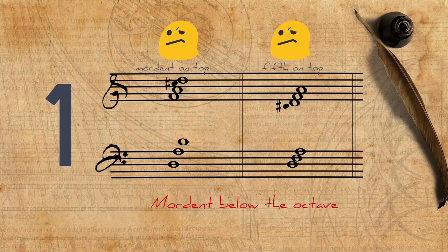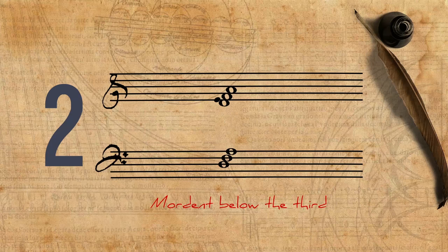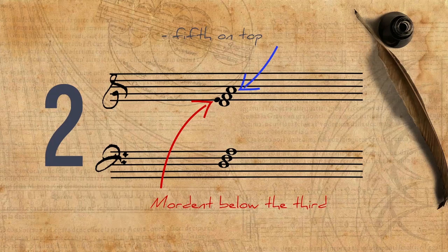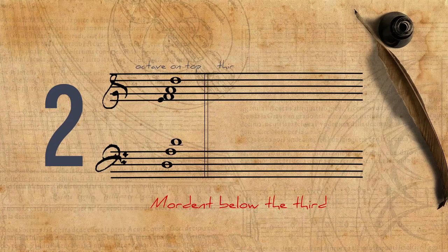Two, a mordent could be played below the third of a chord, like so. In this case, Gasparini explicitly says that it can be added only in a position where the fifth is on top, and also that it is most often used in minor chords. That means that this and this are wrong according to him, and that this is not used often.